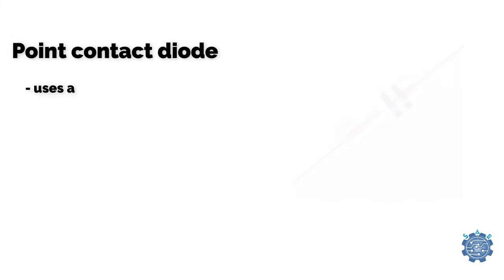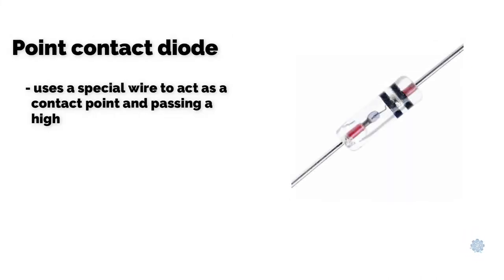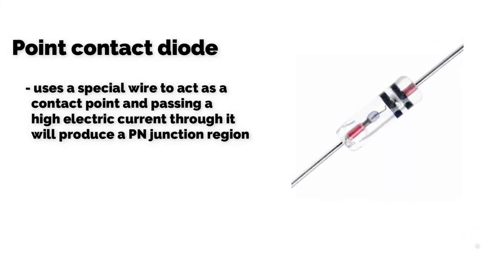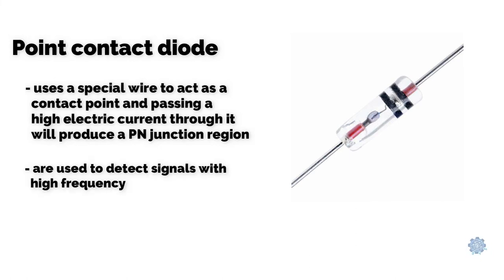Point contact diode uses a special wire to act as a contact point and passing a high electric current through it will produce a PN junction region. These diodes are used to detect signals with high frequency.